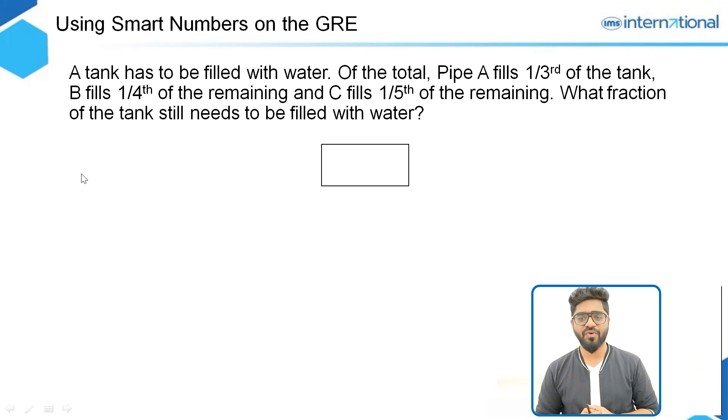The question is: a tank has to be filled with water. Of the total, Pipe A fills one third of the tank, B fills one fourth of the remaining, and C fills one fifth of the remaining. What fraction of the tank still needs to be filled with water?